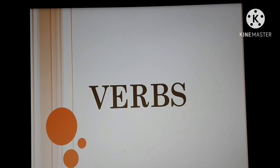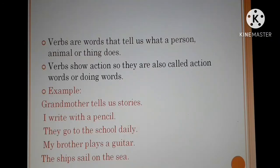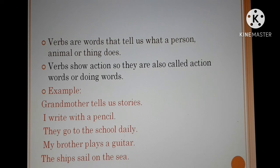The next topic is verbs. Hindi mein hum verbs ko 'kriya' kehte hain. Verbs are words that tell us what a person, animal, or thing does — what action they perform. Verbs show action, so they are also called action words or doing words. Verbs also tell us when an action happened — whether it is happening now, happened in the past, or will happen in the future.